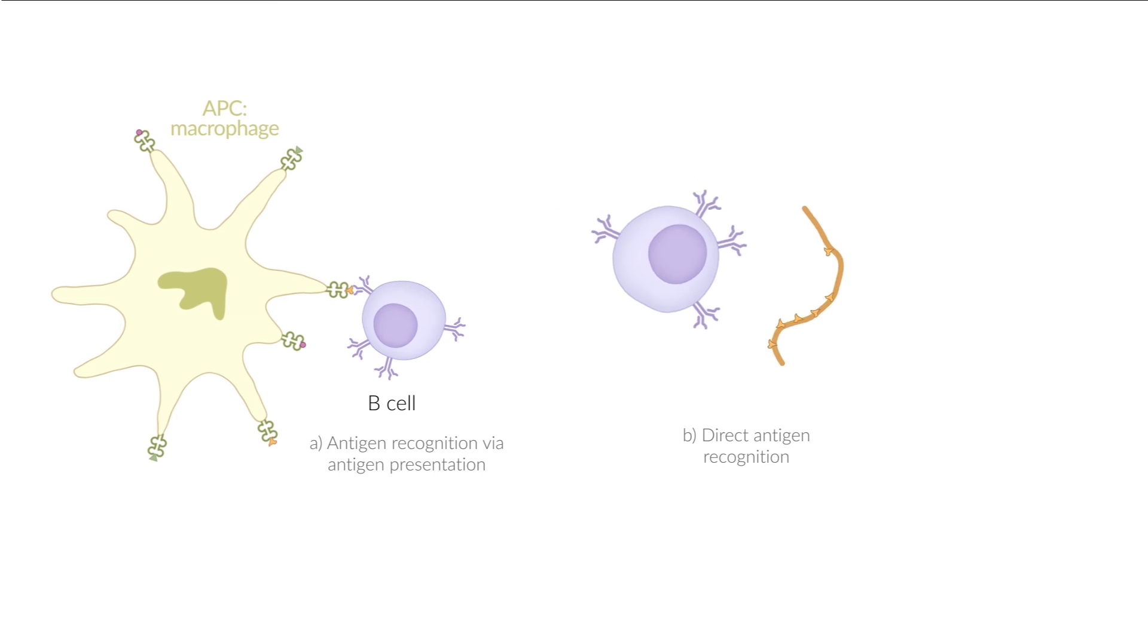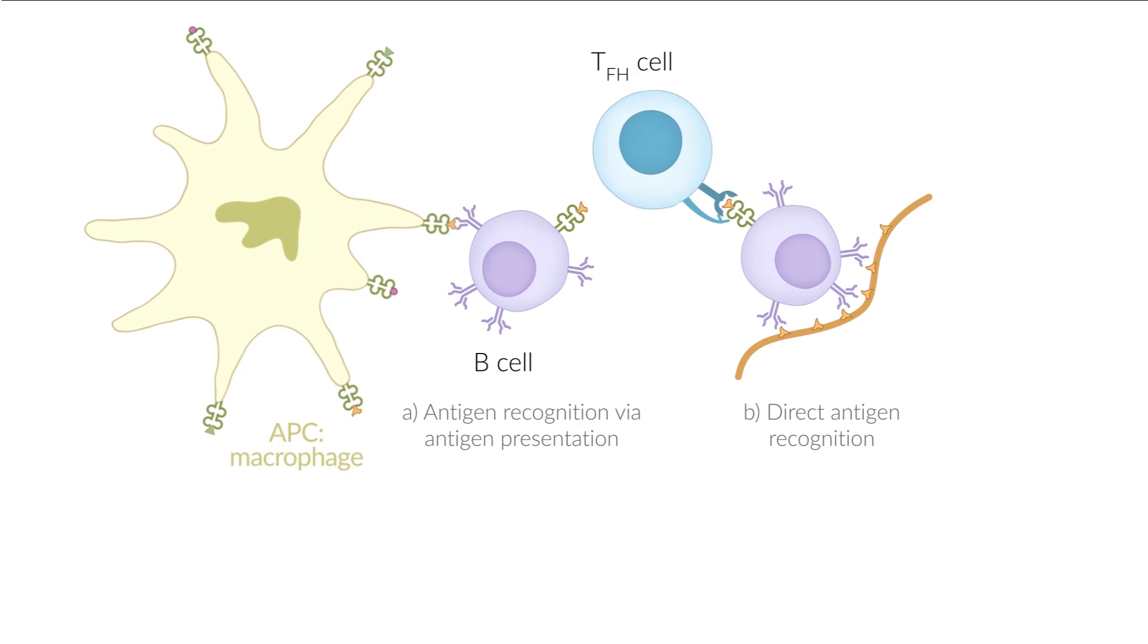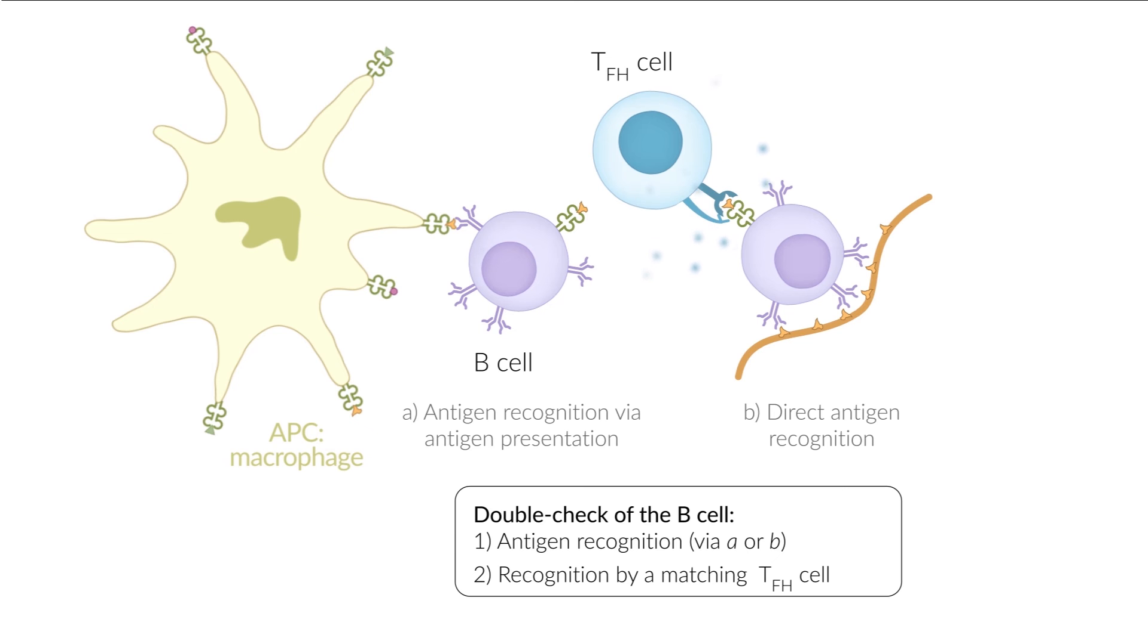Once a B cell finds the antigen matching its receptor, it's then presented via MHC class II on the cell surface. If this antigen is recognized by a matching, previously formed TFH cell, it then binds to the B cell with its T cell receptor and auxiliary proteins. After this double-check, the B cell is activated by cytokines and starts to proliferate.